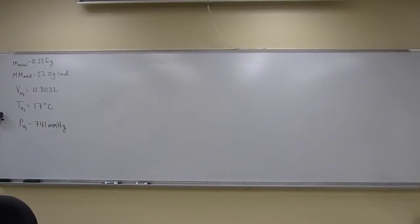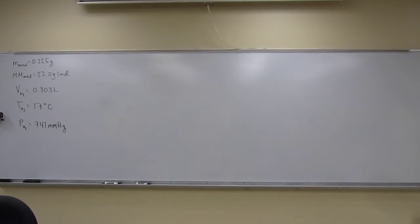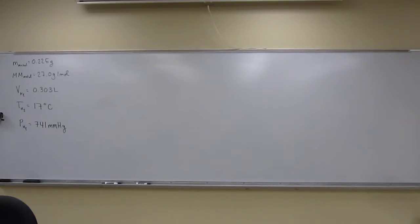Let's try this problem. A quantity of 0.225 grams of a metal, with a molar mass of 27.0 grams per mole, liberated 0.303 liters of molecular hydrogen, measured at 17 degrees Celsius and 741 millimeters of mercury, from an excess of hydrochloric acid. We need to deduce the corresponding reaction equation, and write formulas for the oxide and the sulfate of M, the metal.